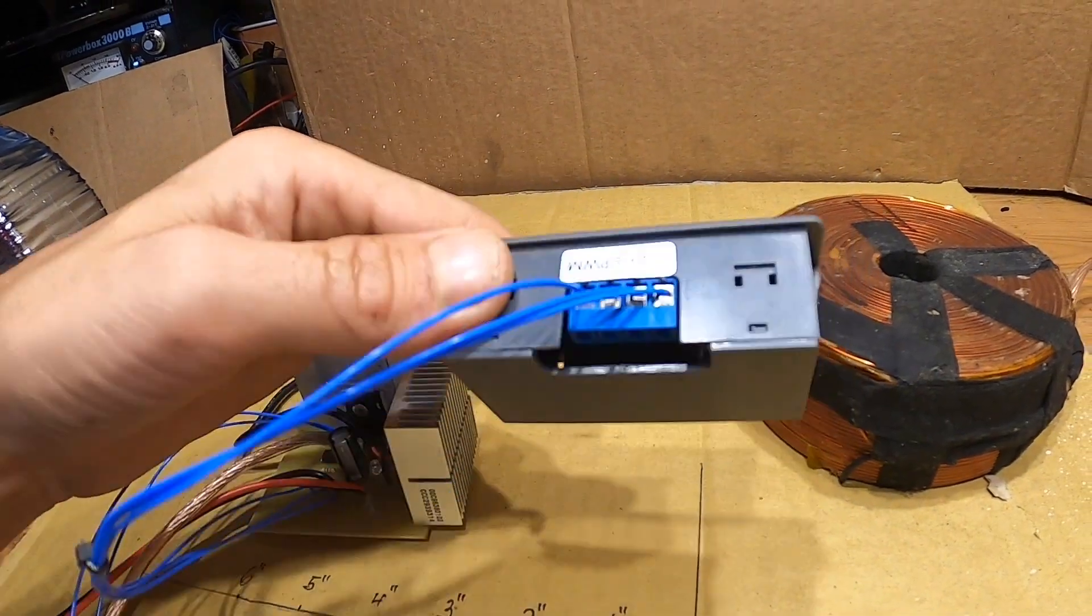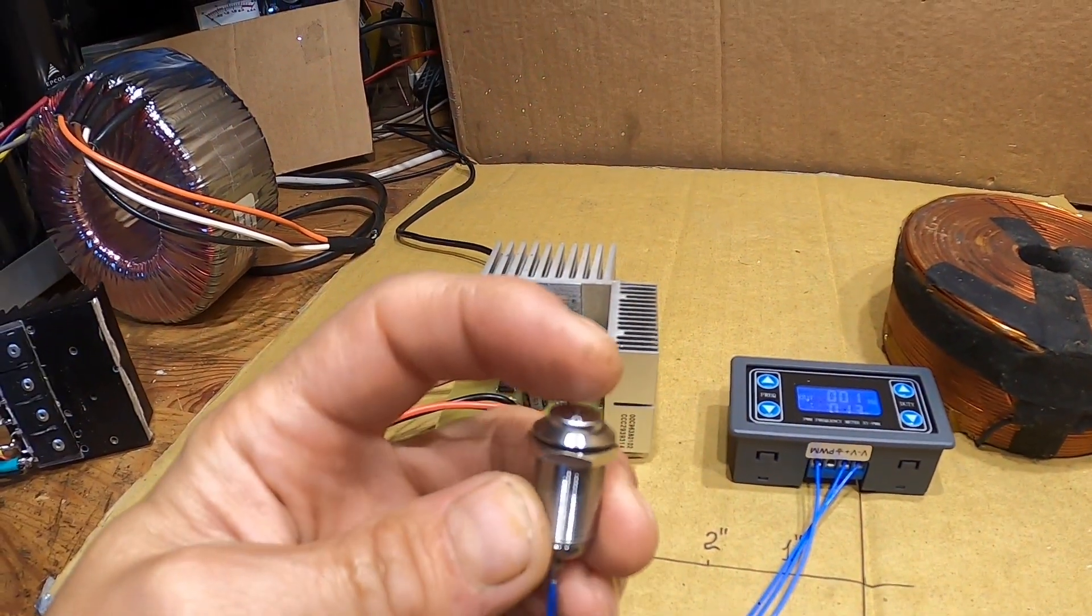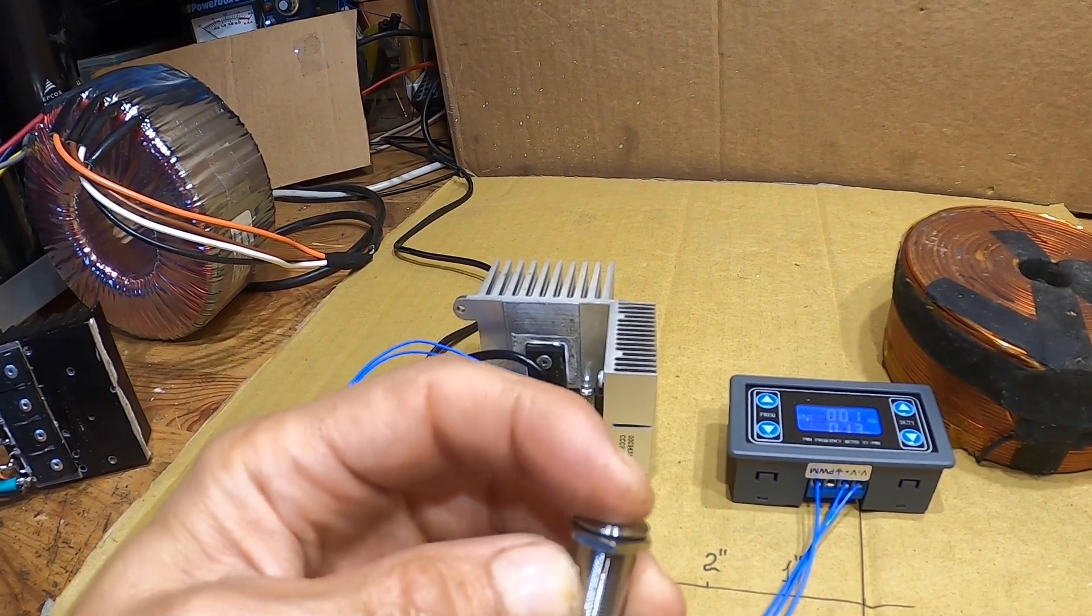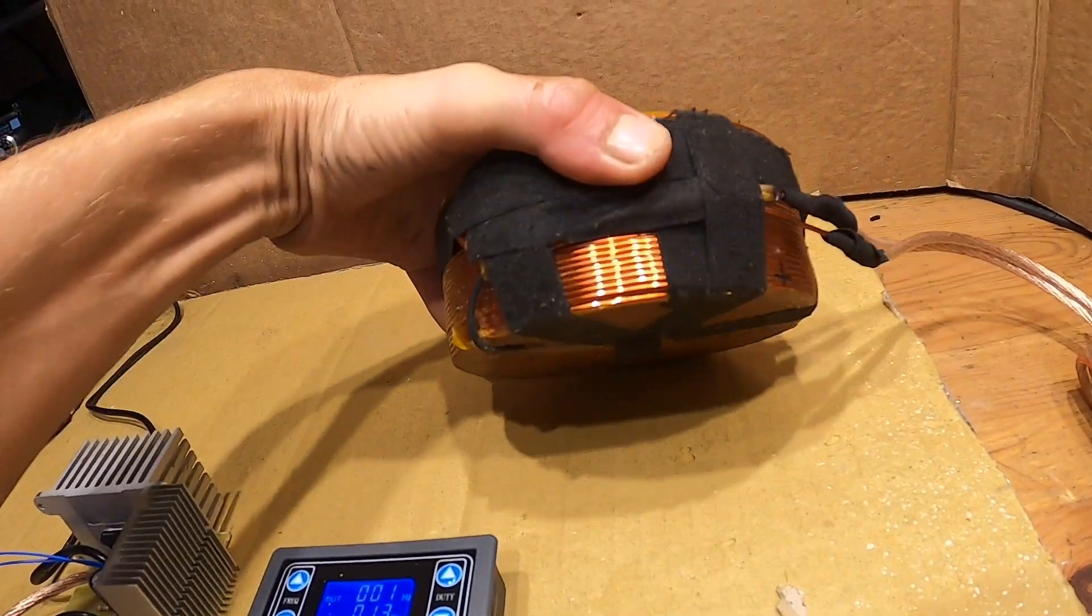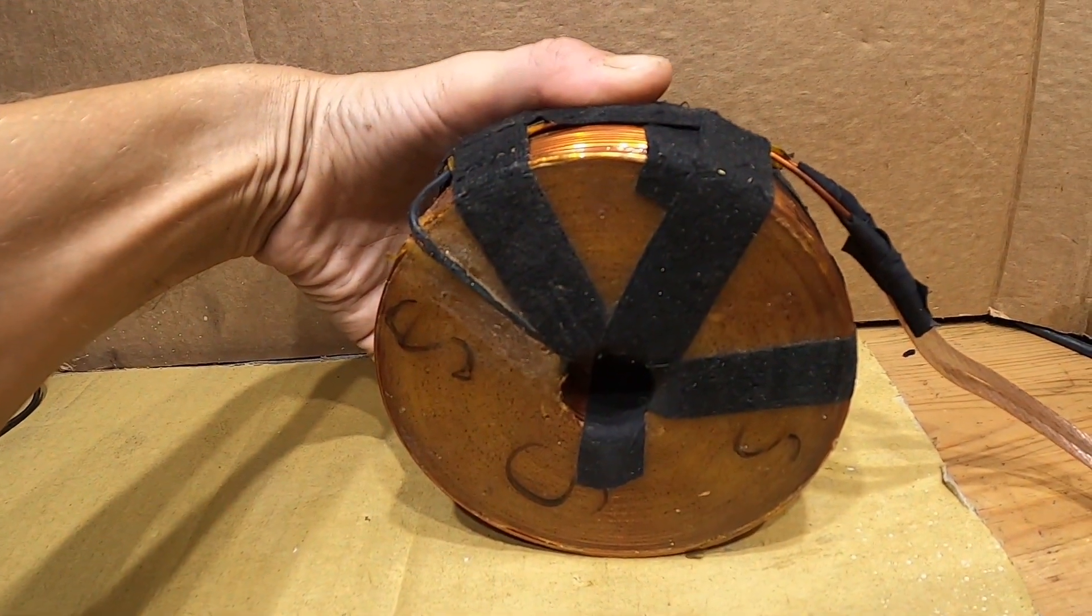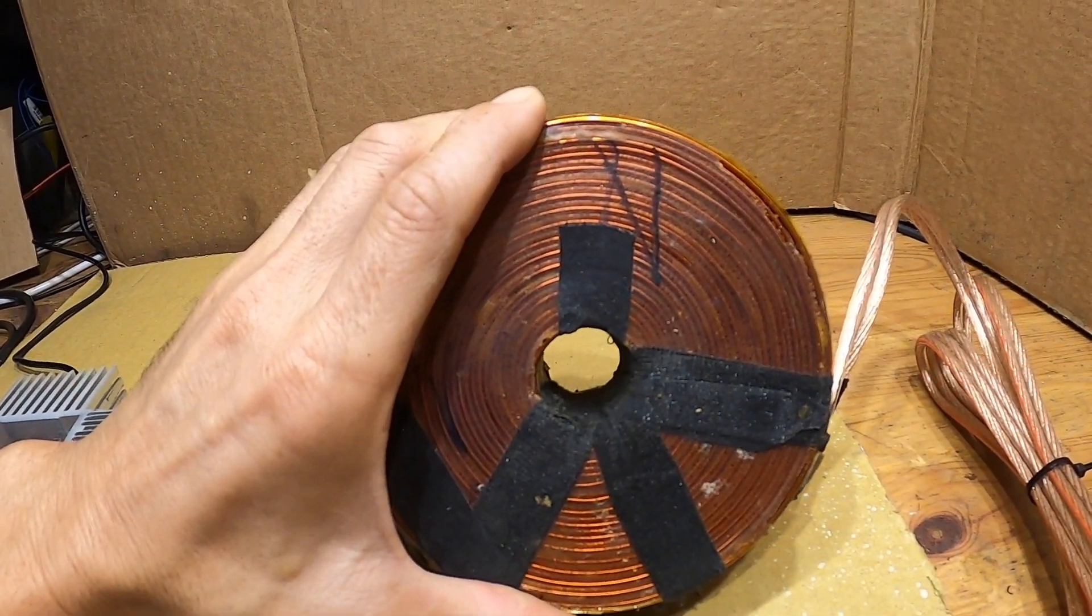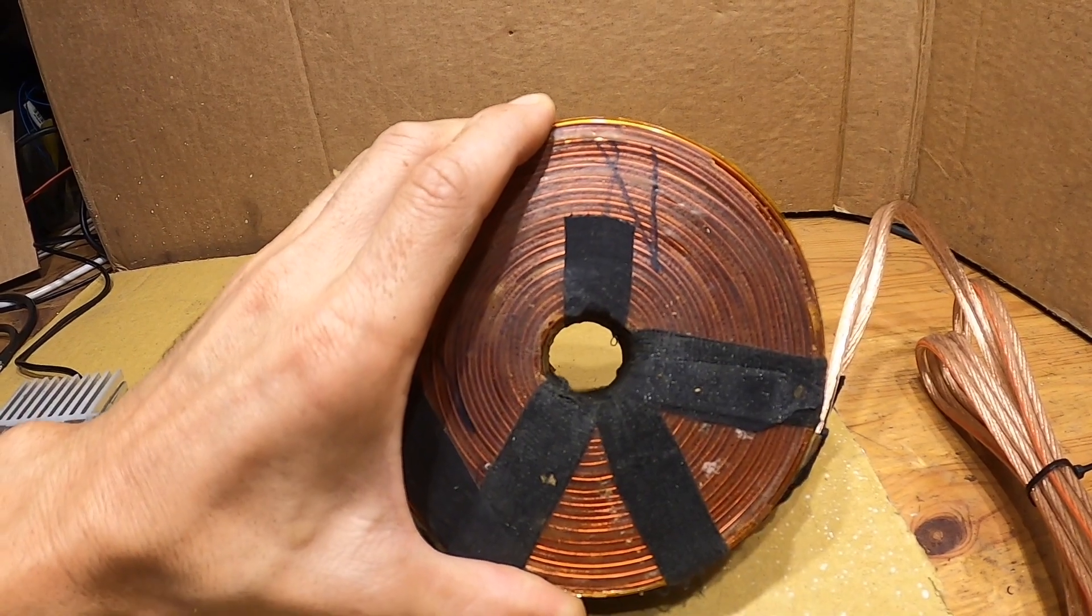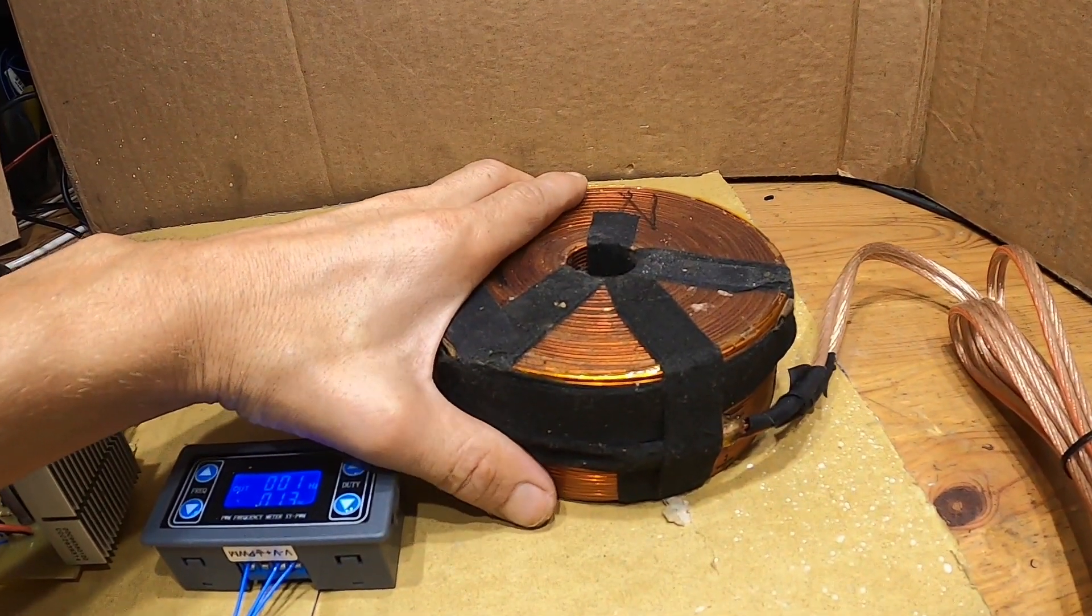Then I have a pulse width modulator, I have a button you can latch this button, and I have my coil. This is 2 ohm coil made out of 14 gauge wire, internal diameter 1 inch, external 5 inches, weighs close to 10 pounds.